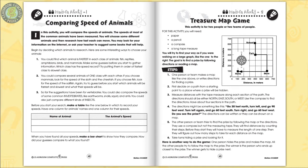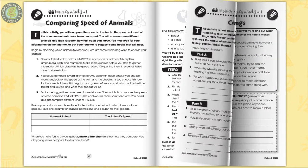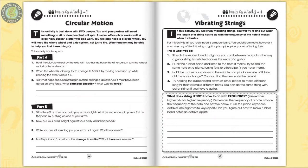The hands-on activities are designed to get your students thinking and elaborating on everything they have learned so far. Follow directions to find your way using a treasure map. Conduct an experiment with a bicycle wheel and office chair to learn about circular motion.